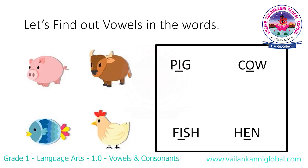In this picture we can see pig, cow, fish, and hen. In 'pig,' I is a vowel. In 'cow' (C-O-W), O is a vowel. In 'fish' (F-I-S-H), I is a vowel. In 'hen' (H-E-N), E is a vowel.